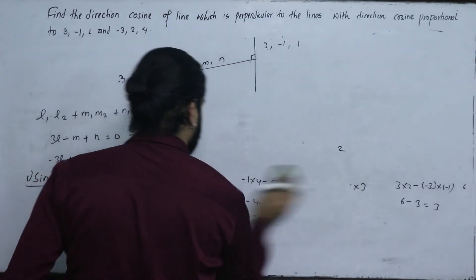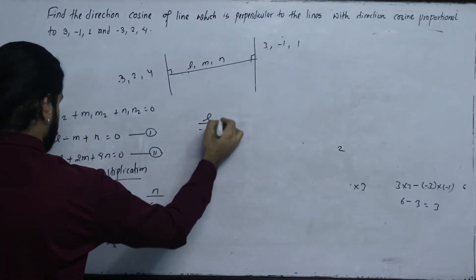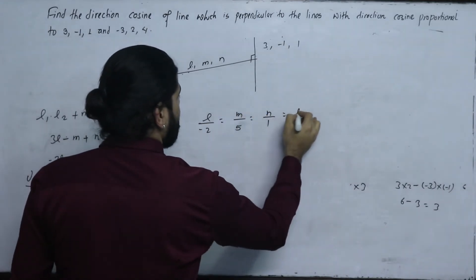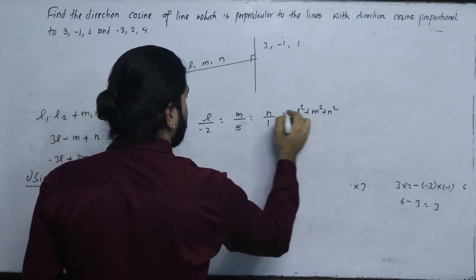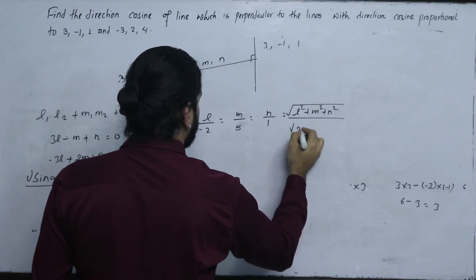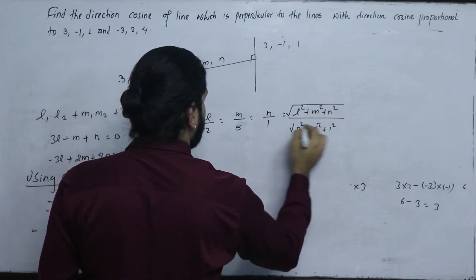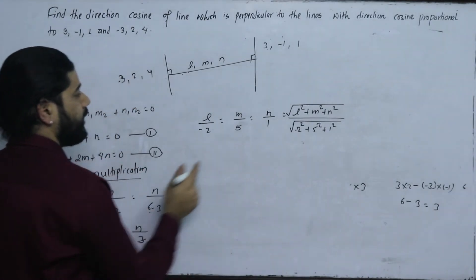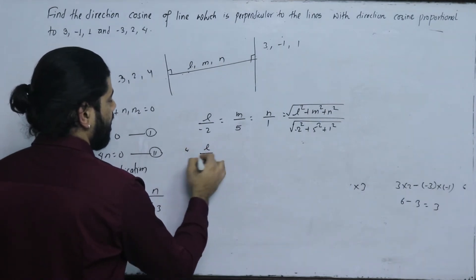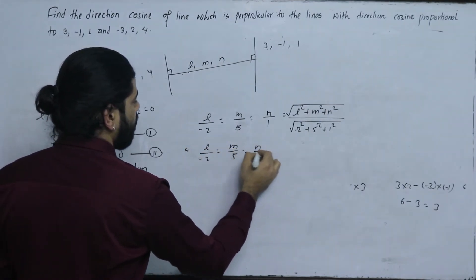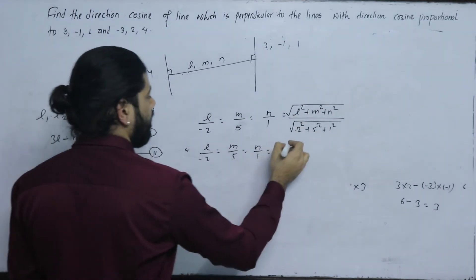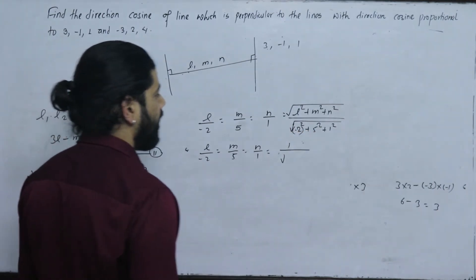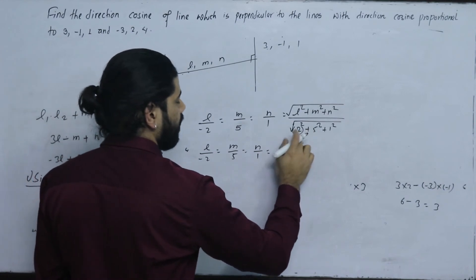Therefore, L by minus 2 equals M by 5 equals N by 1. The magnitude is the square root of L squared plus M squared plus N squared, which equals the square root of minus 2 squared plus 5 squared plus 1 squared, giving root 30.